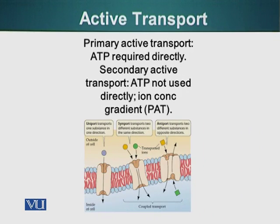There are two types of active transport. Primary active transport is when a molecule is moved across the plasma membrane using energy from ATP hydrolysis. There is also secondary active transport, in which ATP is not directly used, but rather an ion concentration gradient is used to move molecules across the plasma membrane.